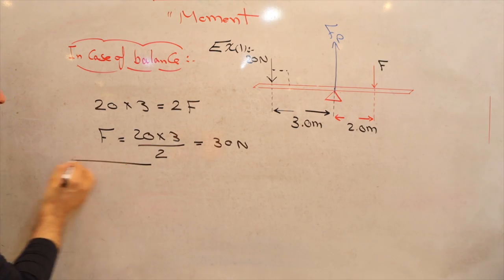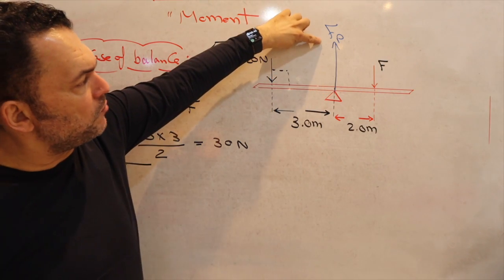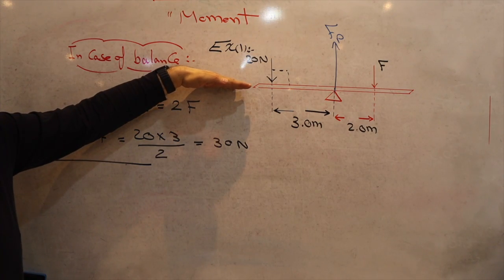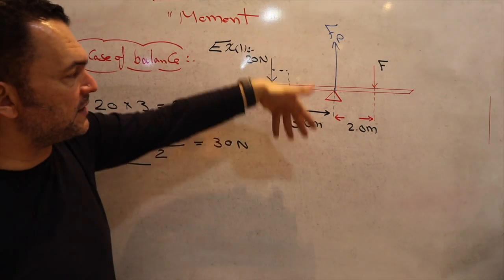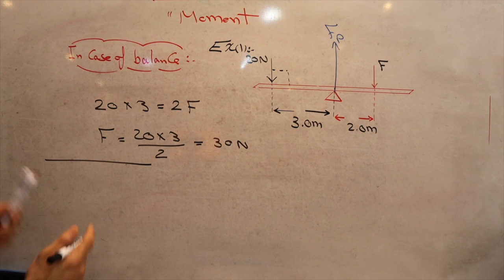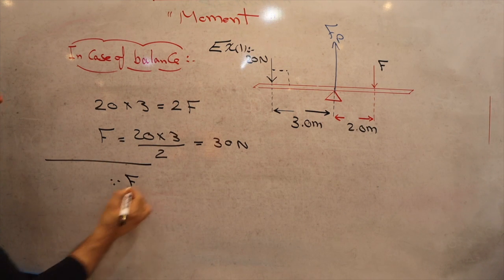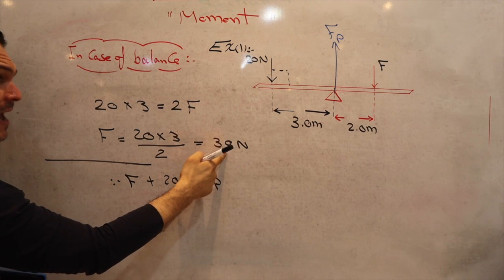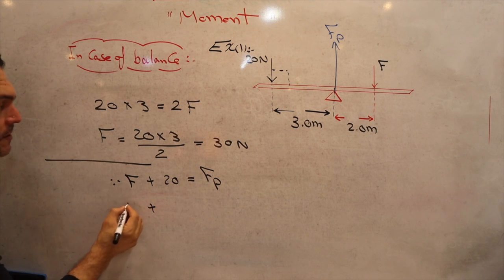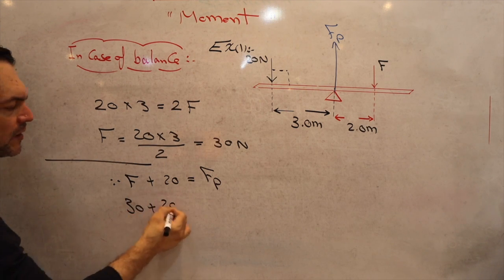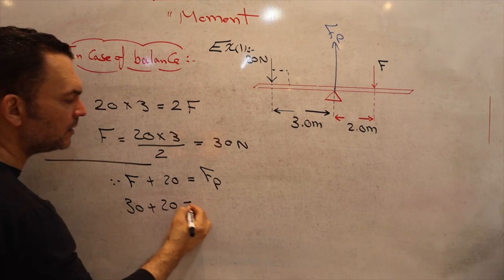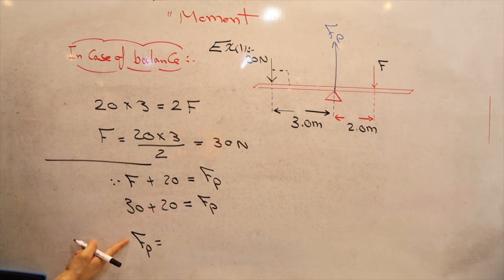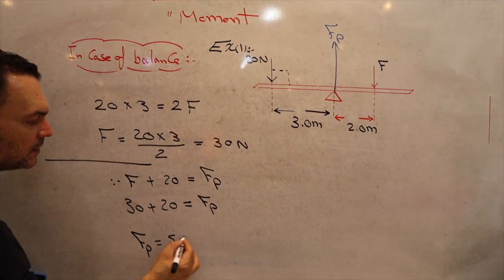The second question asks us to find Fp, the force done by the pivot. Applying Condition two: total force down equals total force up. F plus 20 equals Fp, so 30 plus 20 equals Fp. Therefore Fp equals 50 Newtons, and the system is in balance.